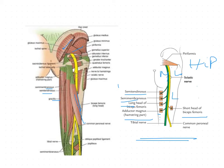In applied anatomy, a commonly observed condition is sciatica, which is a shooting pain along the course of the sciatic nerve on the back of the thigh, due to pressure or irritation of the nerve roots. In sciatica, novocaine is normally injected into the nerve midway between the greater trochanter and the ischial tuberosity.